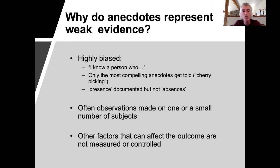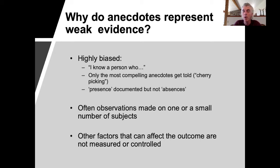The second reason that anecdotes represent weak evidence is that they're typically based on a very small number of observations. As a result, we don't really know how general those patterns are. And finally, anecdotes could easily be influenced by other unmeasured factors that we haven't taken into consideration. For example, the pond in your backyard might turn green because of that particular time in the summer — temperatures in the pond are warm enough for an algal bloom to emerge, and it might not correspond at all to the particular rain event that had just happened.